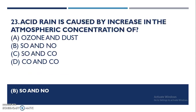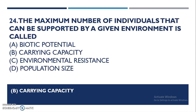Acid rain is caused by an increase in sulfur dioxide and nitrogen oxide — as discussed earlier. The maximum number of individuals that can be supported by a given environment is called the carrying capacity of the environment.